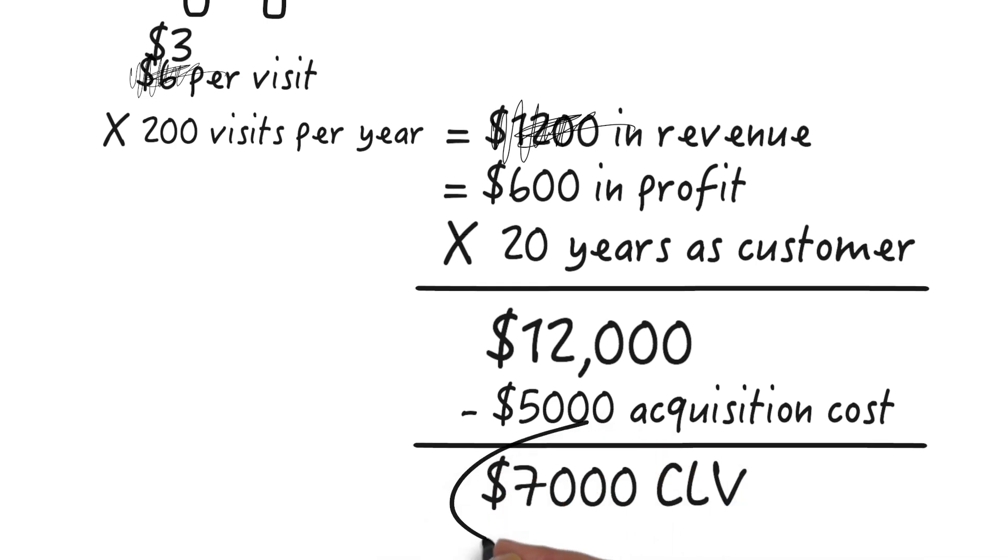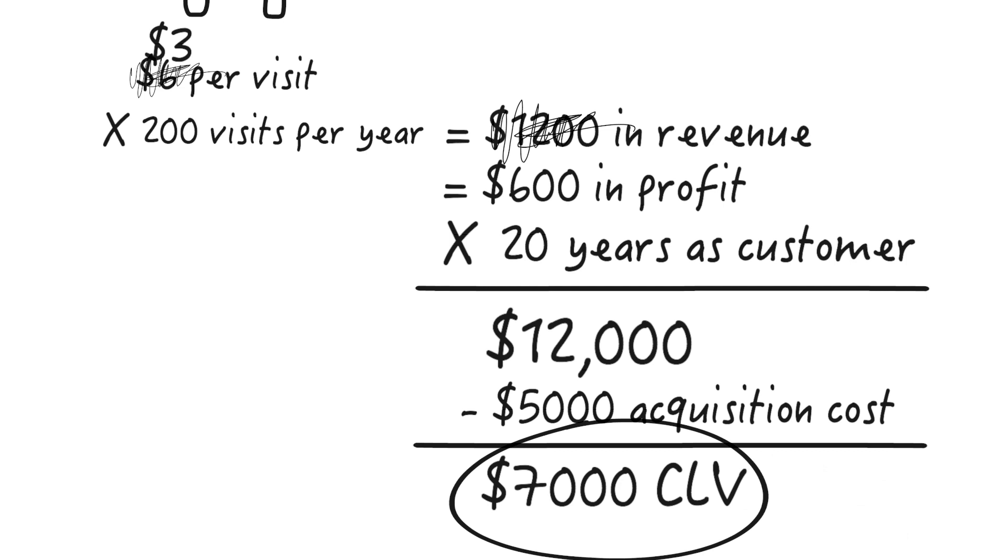This number is going to help us figure out how much to pay to acquire and retain customers. Beyond that, we can see how important it is to sell more to our existing customers. Can we push the $6 per transaction higher? Could we stretch 20 years of loyalty to 25? How much will that cut into our contribution margin? We could also take a more nuanced view and look at the impact of low and high profit customers.